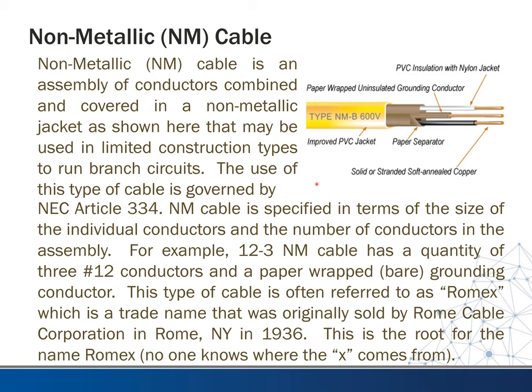NM cable is specified in terms of size of individual conductors and the number of conductors in the assembly. For example, 12-3 NM cable has a quantity of three number 12 conductors and a paper-wrapped bare grounding conductor. This type of cable is often referred to as Romex — that's the trade name. The history behind that is that it was originally sold by Rome Cable Corporation in Rome, New York in 1936, which is the root of the name Romex.